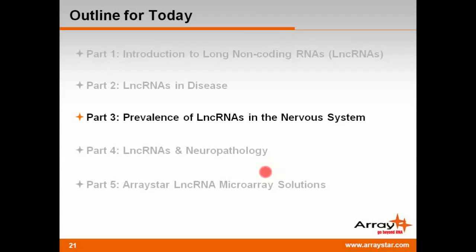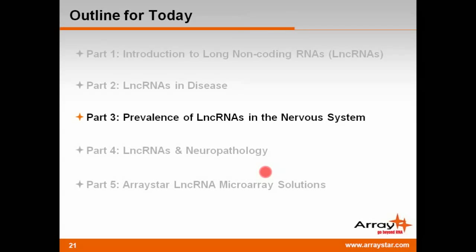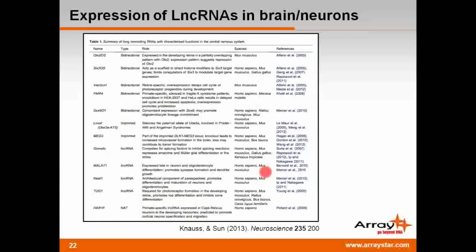Now that I've gone over the association of some LNCRNAs with disease, I'll proceed to part three — the prevalence of LNCRNAs in mammalian nervous systems. LNCRNAs are widely expressed in mammalian central nervous systems. As I mentioned earlier, more than half of all known LNCRNAs were found to be expressed in human brains. This slide shows a partial list of LNCRNAs known to be expressed in neurons. Some of the better characterized examples include MEG3, MALAT1, and TUG1, which are expressed in the brains of both mice and humans.